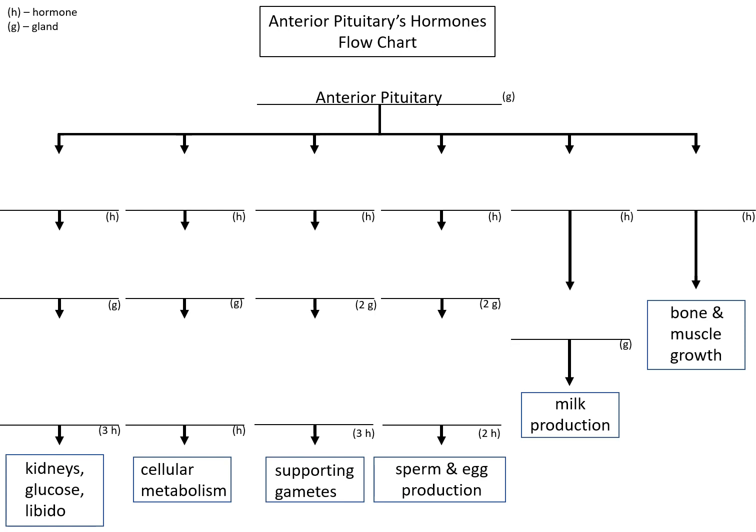One of the challenges of learning the endocrine system is keeping the hormones straight — who's making them, what hormone it is, where it's going, and what its ultimate effects are. I made these series of flowcharts to help students sort these things out. With this one, the focus is on the anterior pituitary, the hormones that it makes, and what are the end results. I'll help you go through these so you can fill them in.